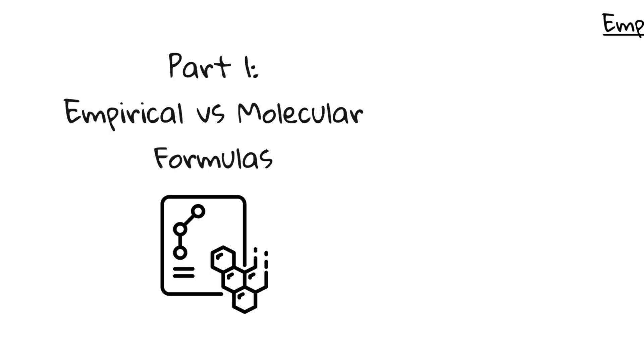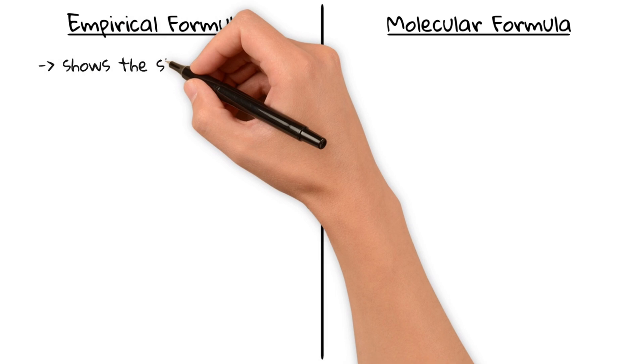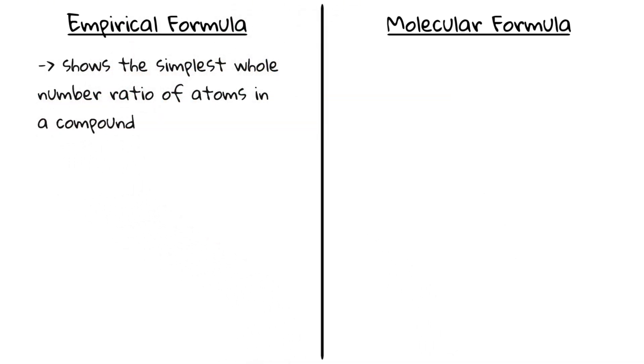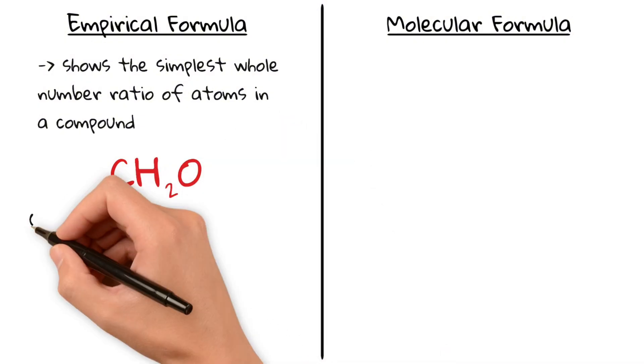First up, what's the difference between empirical and molecular formulas? An empirical formula shows the simplest whole number ratio of atoms in a compound. For example, CH2O for glucose.